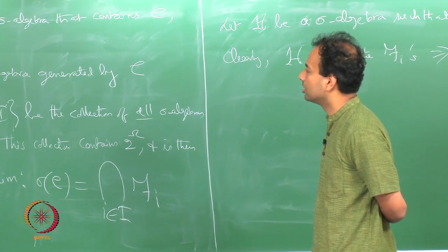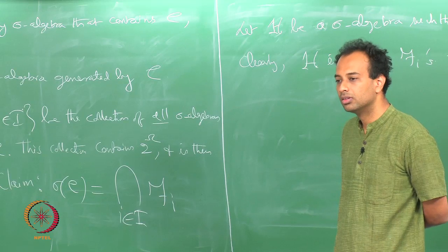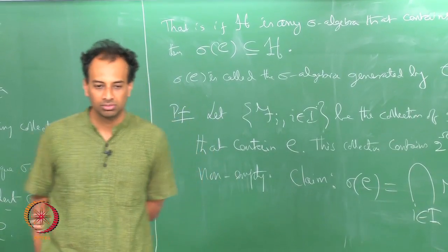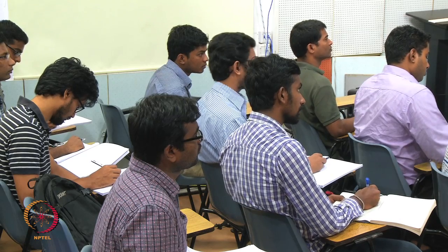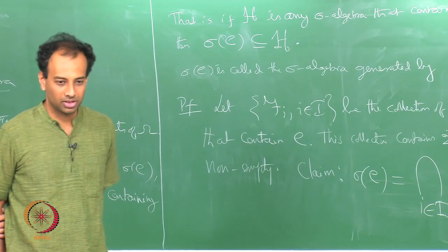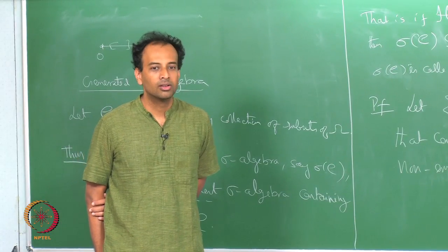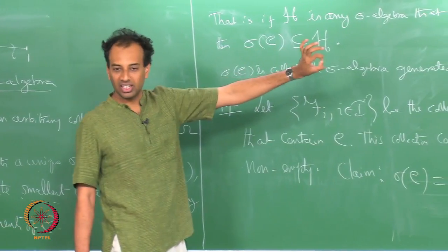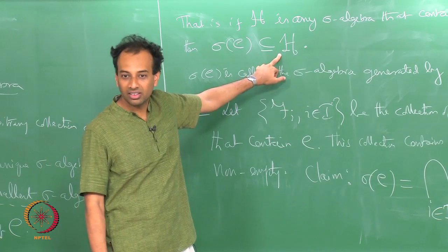Student question: must all F_i's contain C to be sigma algebras? No — the F_i's are those sigma algebras which contain C; there may be other sigma algebras that do not contain C. Sigma algebras are defined over subsets of omega and C is some collection of subsets of omega. The smallest sigma algebra that contains C means that any other sigma algebra that contains C must be larger in this sense.